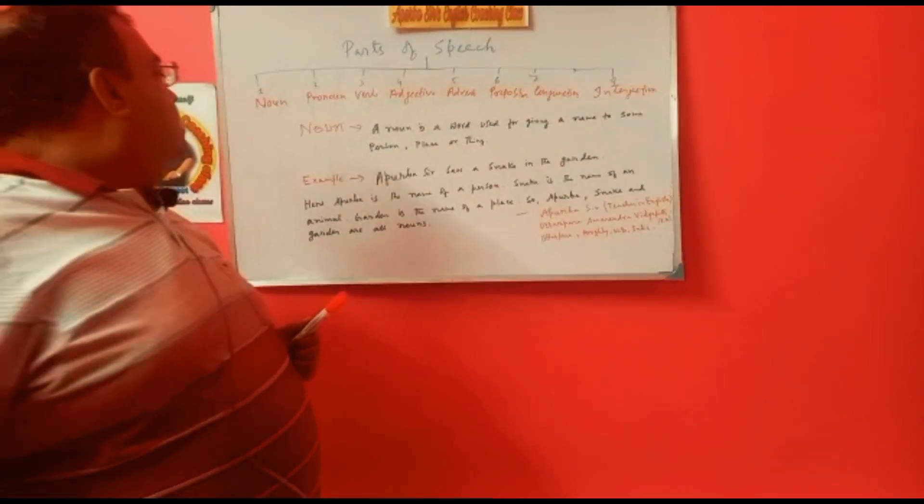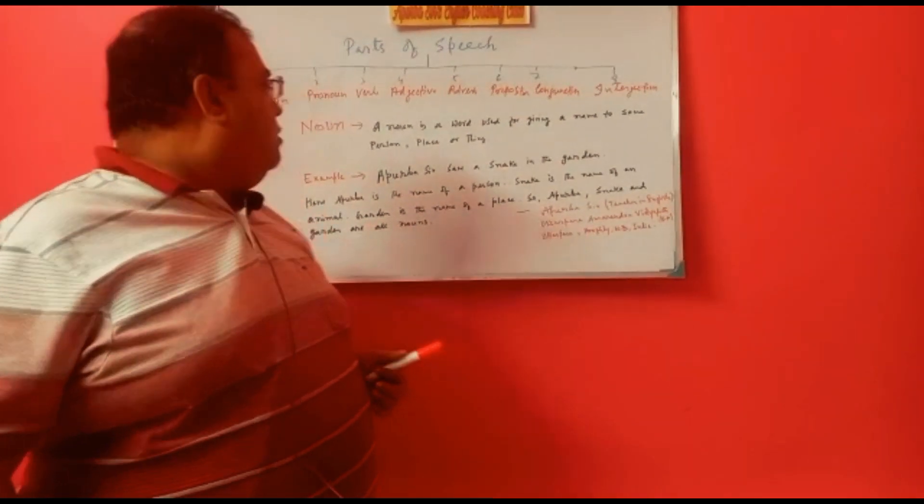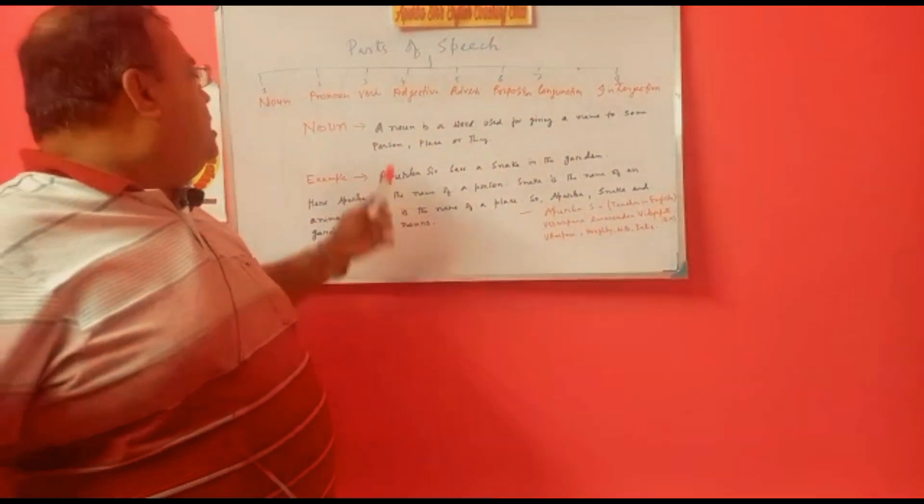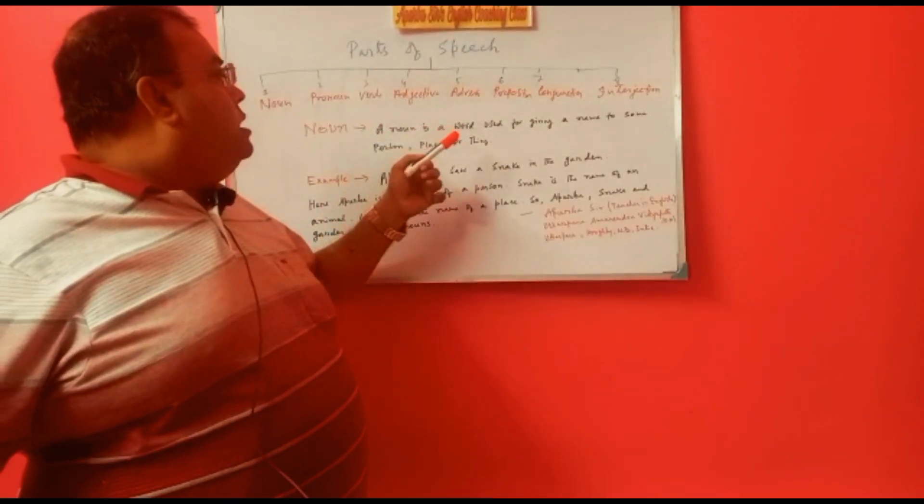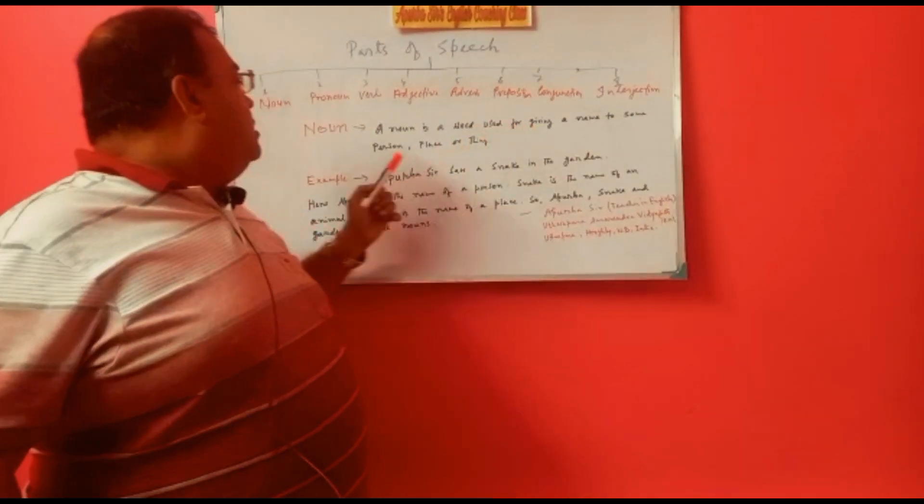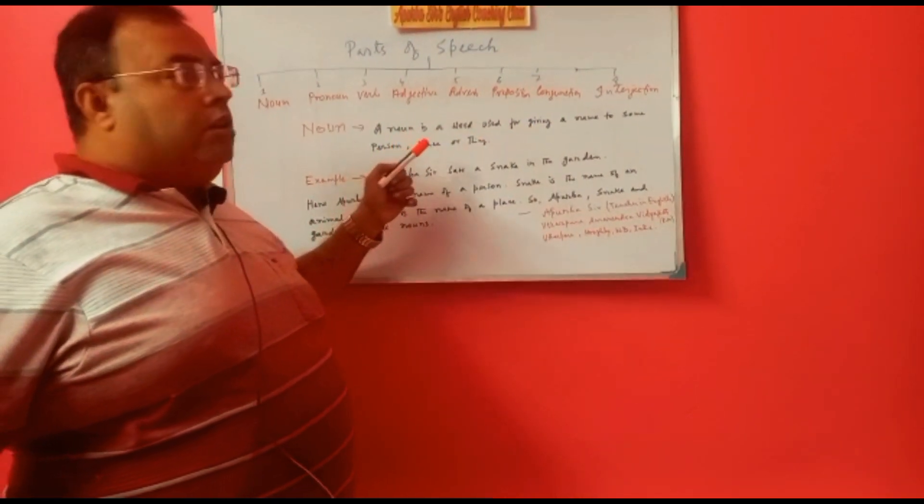Now come to noun also. What is noun? In a definition, a noun is a word used for giving a name to some person, place, or thing.